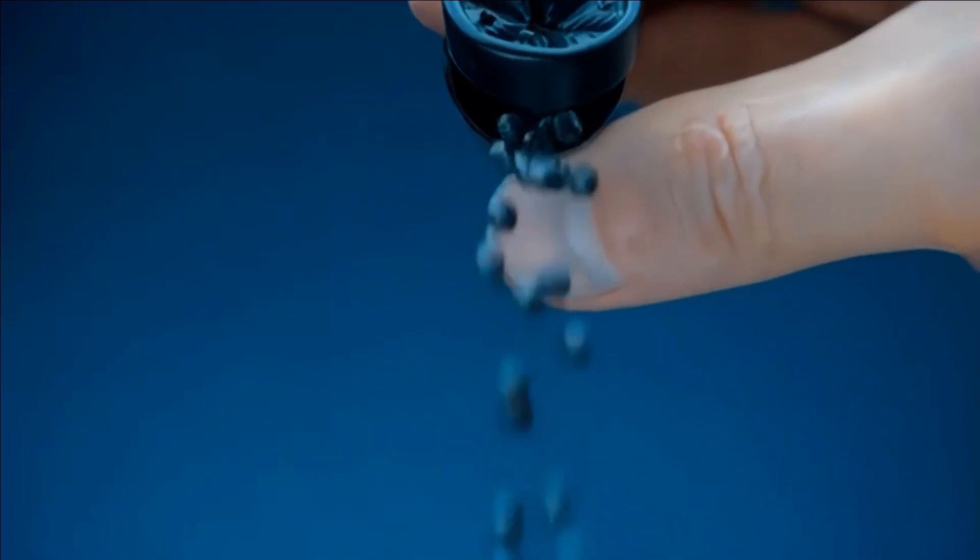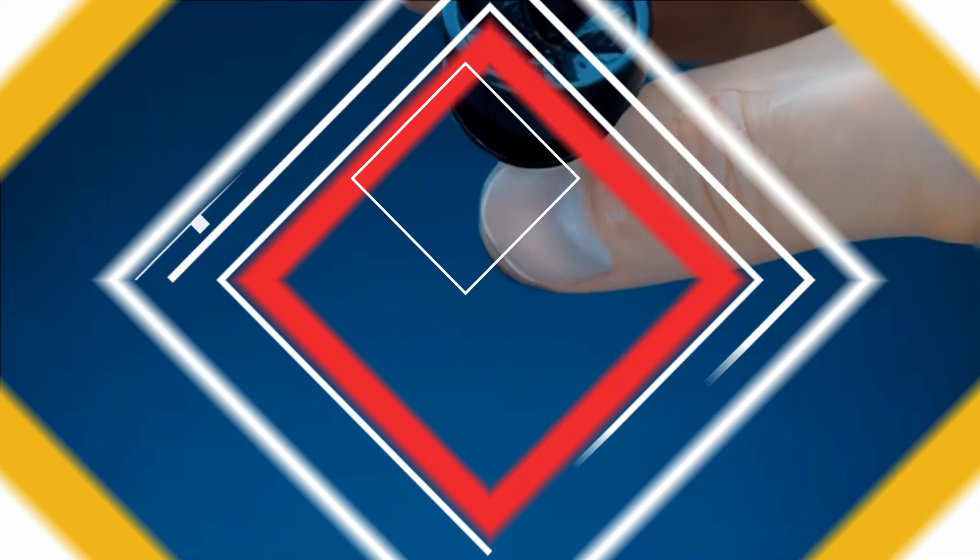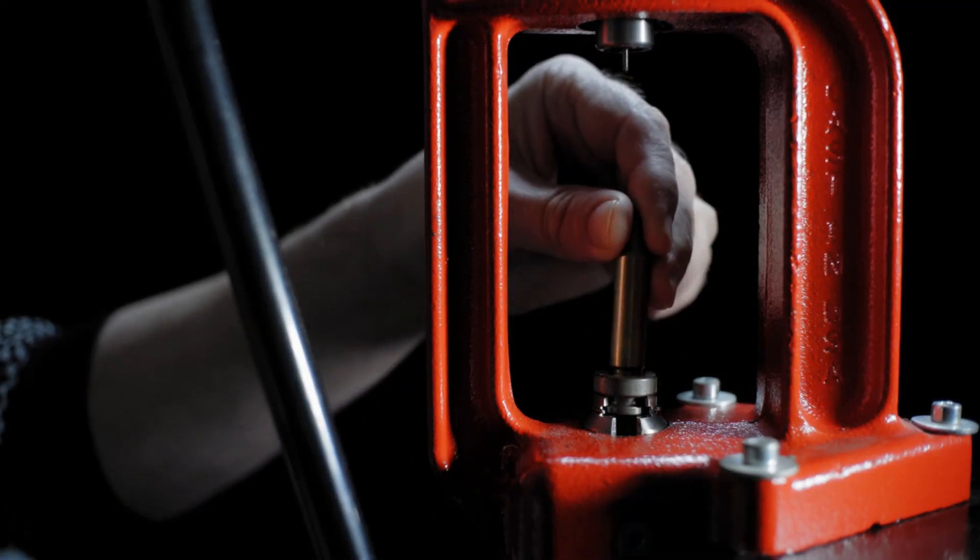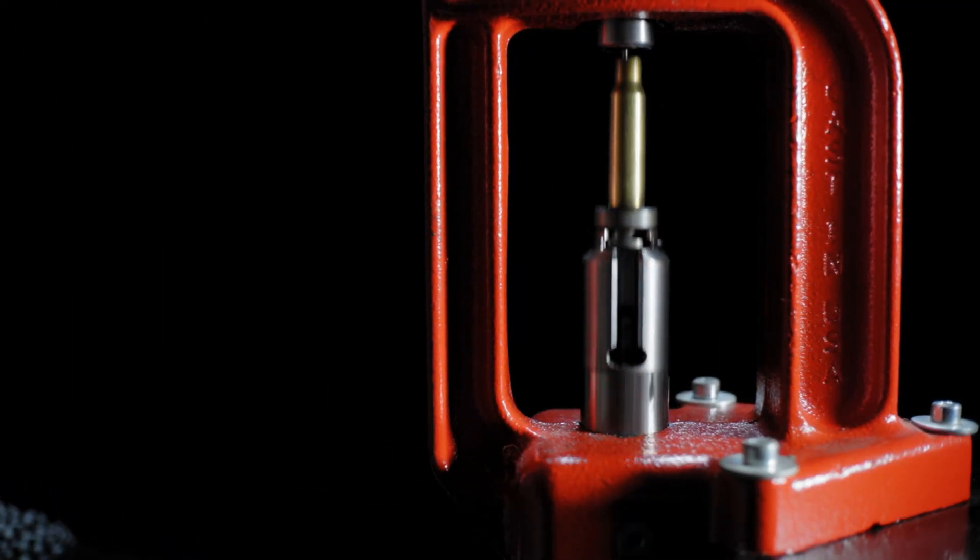The cartridge's body, called the case, is usually made from durable materials like brass, steel, or aluminum. Shotgun shells often use lighter materials, typically a plastic case with a metal base.